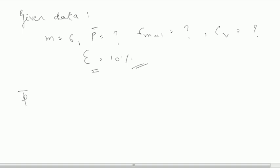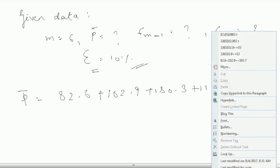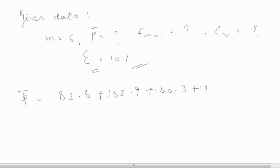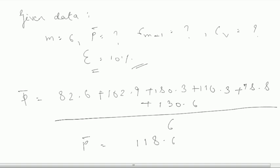First we will calculate P bar. So P bar will be calculated how? 82.6 rainfall at station A, then 102.9 rainfall at station B, like this 180.3 plus 110.3 plus 98.8 plus 130.6. This whole will be divided by 6, and by dividing this you will get your P bar equal to 118.6 centimeters. Don't forget to write this unit. Unit writing carries marks both in your semester exam as well as in your IES written exam.